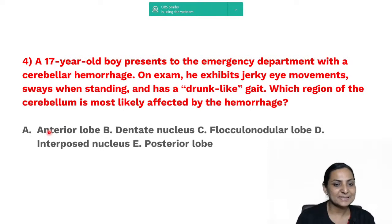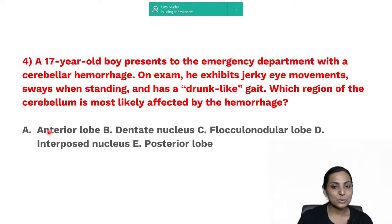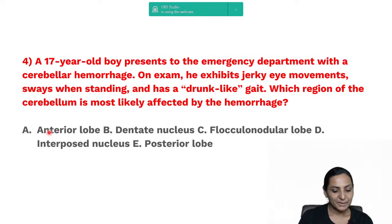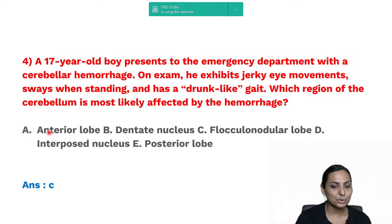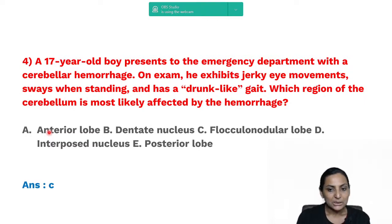Next: a 17-year-old boy presents to the emergency department with cerebral hemorrhage. On examination, he exhibits jerky eye movements, swaying when standing, and a drunken gait. Which region of the cerebellum is likely affected — anterior lobe, dentate nucleus, flocculonodular lobe, interpositus, or posterior lobe? The correct answer is the flocculonodular lobe.